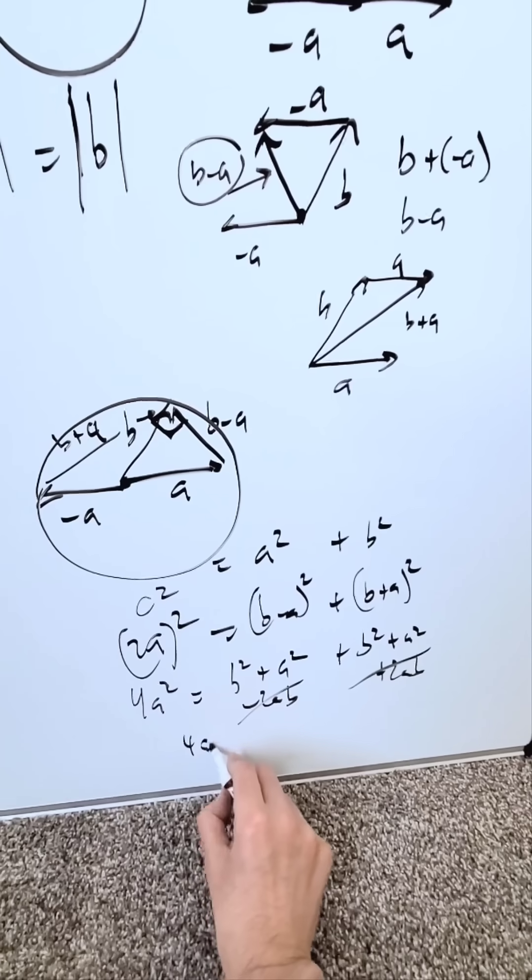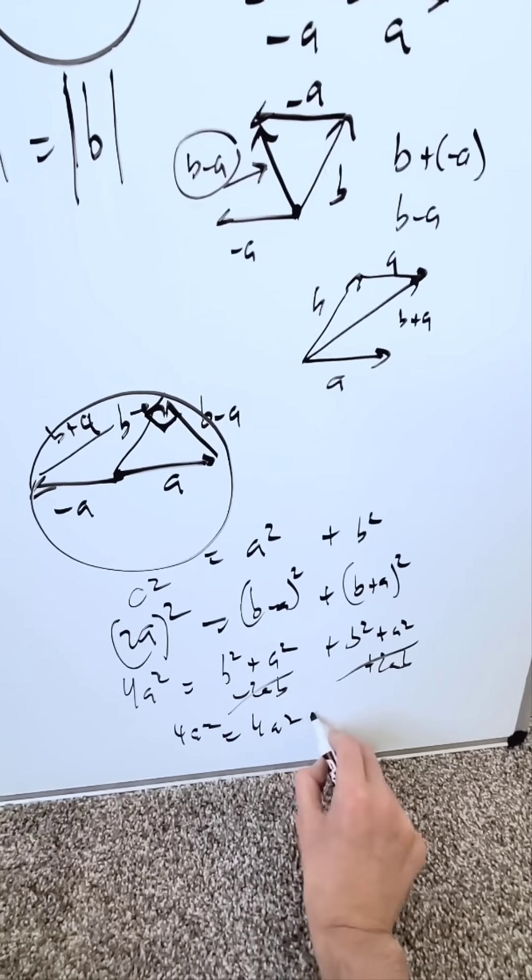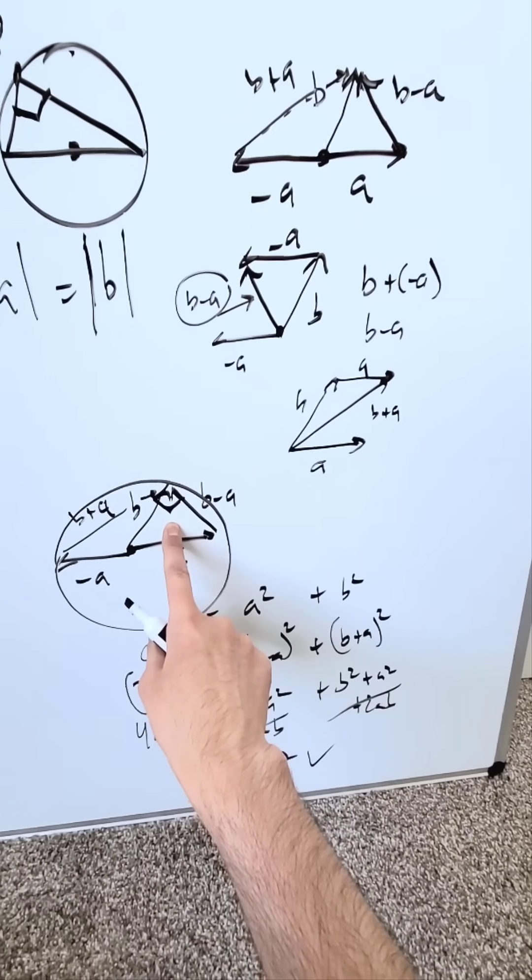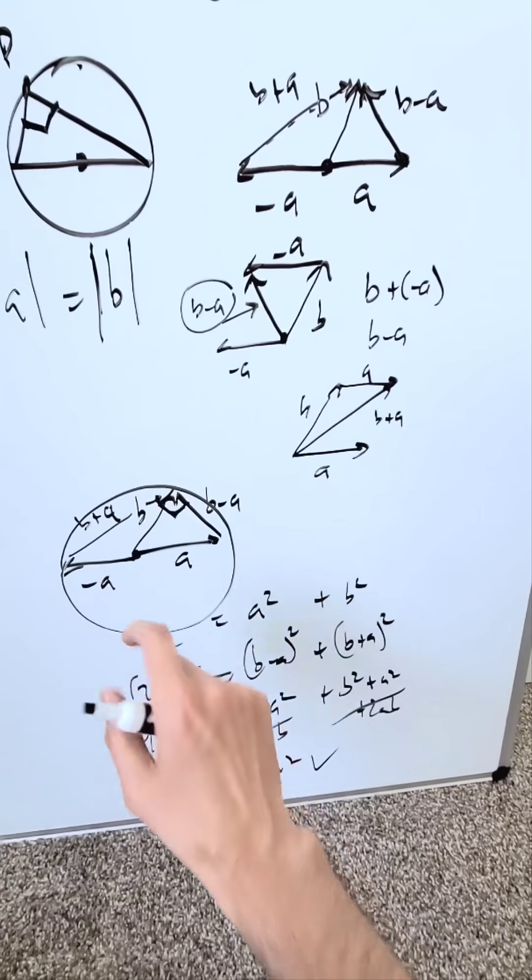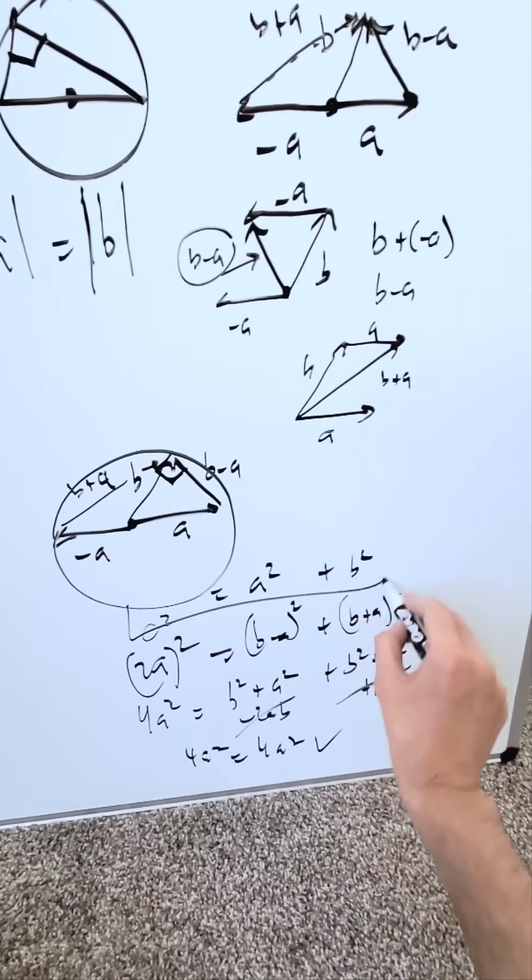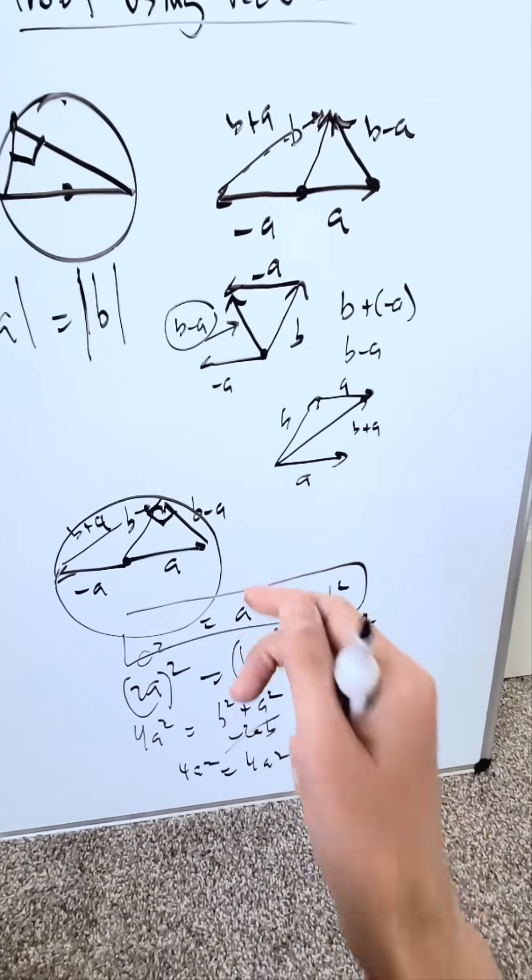I have a 4A square is equal to 4A square and it checks out meaning this indeed is an inscribed right triangle. That angle must be 90 degrees because the Pythagorean formula helped us prove it through using vectors.